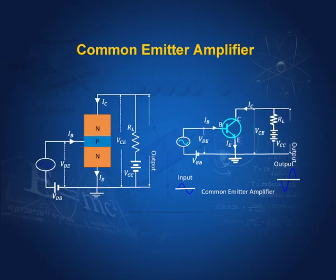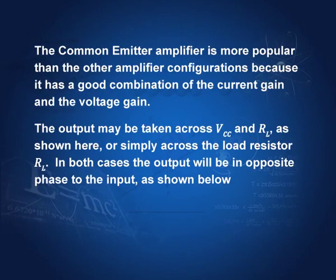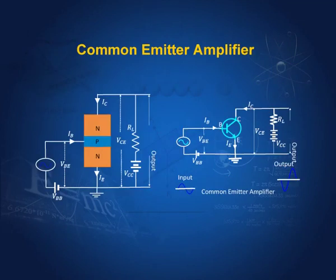This is the circuit for the common emitter amplifier. The emitter is at the bottom, the collector is at top, the base is the input side, the emitter-base junction is forward biased and the collector-base junction is reverse biased. These are the voltages VBB and VCC, and the output is taken across VCE. The common emitter amplifier is more popular than the other configurations because it has a good combination of current gain and voltage gain. The output may be taken across VCC and RL, or simply across the load resistor — in both cases, the phase difference of 180 degrees remains.